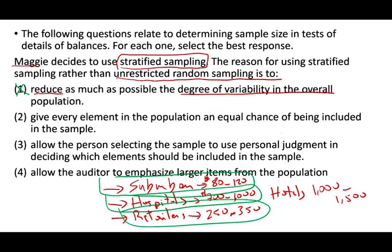Answer B — giving every element in the population an equal chance of being included — that's random sampling, meaning you combine them all together and pull them randomly. That's also not stratifying, so B is out. Answer C — allowing the person selecting the sample to use personal judgment — that's professional judgment, which is different from stratified sampling. C is out. By process of elimination, D is the answer, but let's take a look at it.